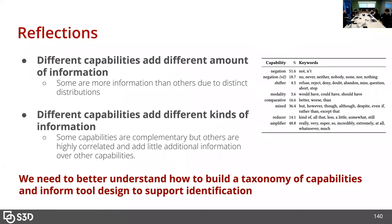Besides the positive signals, we also have some issues. Mostly two problems. First, we found different capabilities carry different amounts of information — some are more informative than others. For example, the negation capability can cover half of the dataset, so its distribution is not that different from the original, while capabilities like temporal shift are more distinct. On the other side, we found different capabilities have different kinds of interactions — some are complementary to each other, like using shift and modality together, they help each other, while others overlap. This indicates we need to better understand how to build a good portfolio of capabilities and how to identify better capabilities.